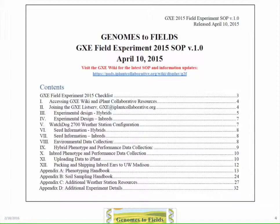One of the things we've leveraged at iPlant Collaborative is a listserv. Every cooperator is enrolled in this listserv so we don't have to keep track of changing email addresses — we can just add people or remove them as they come along. There's also a help email address that goes to those of us in a more supportive role on the project, so collaborators can directly email information to us.